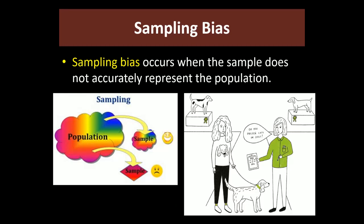The first type is sampling bias — where the sample chosen does not accurately represent the population. Think of the population as a rainbow: a good sample should also be a rainbow with a little of each color. A bad sample would be selecting basically all reds. In real life, this means sampling only males from a mixed population, or only academic students from a full school population, or only one ethnicity. We want our sample to be representative of the population.